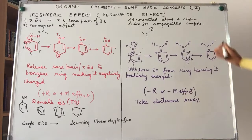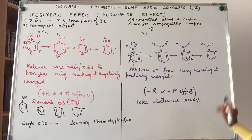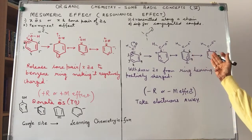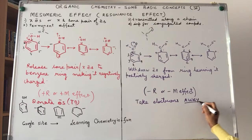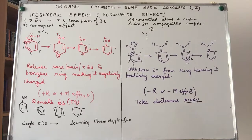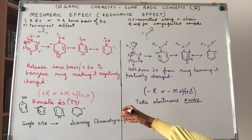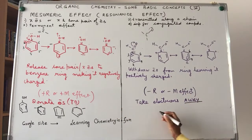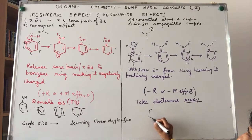Here the atom of the group is withdrawing electrons — taking electrons away from the ring — hence this is a minus M or minus R effect. Contrast: plus R means electrons are given to the benzene ring; minus R means electrons are taken away.